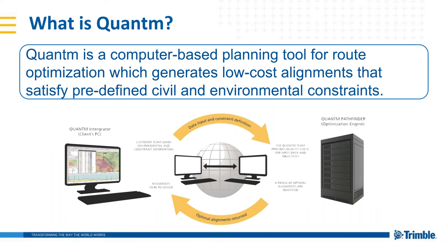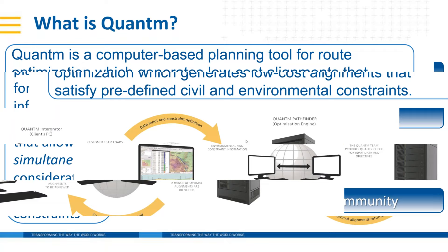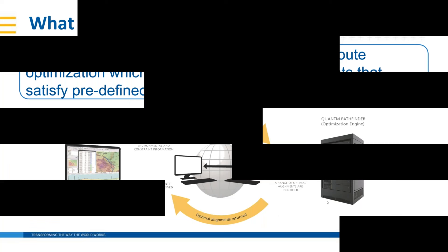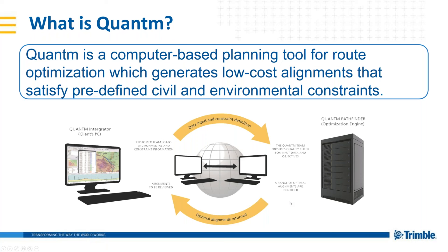Quantum is essentially a route optimization tool for road and rail. It can be utilized from the very early pre-feasibility stage right up to the construction phase. Its primary goal is to generate three-dimensional alignments that are optimal based on key inputs — alignments that have their costs reduced and their earthworks balanced. These are the key elements the system focuses on when optimizing alignments for road projects.